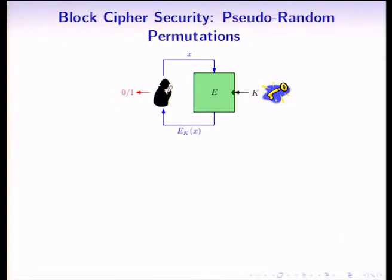For most applications using block ciphers, the security guarantee we require is to be a pseudorandom permutation, which means that the block cipher, when used with a secret randomly chosen key, is indistinguishable from a random permutation.